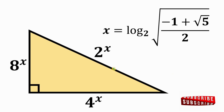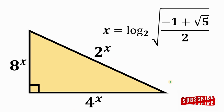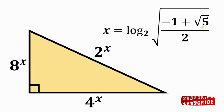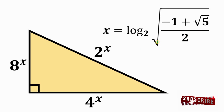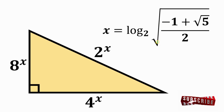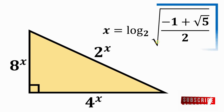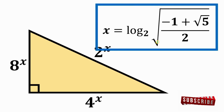Therefore, given this right triangle, the value of x that makes this a valid right triangle simply equals the logarithm of the square root of negative 1 plus square root of 5 over 2, to the base of 2. And as always, we are done. Thank you.